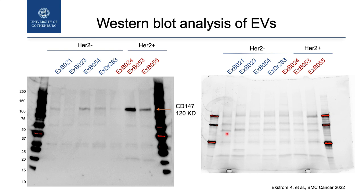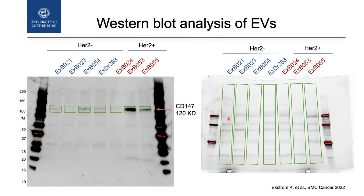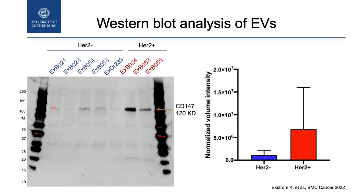We can solve this if we use the total protein that we loaded on the gel and make the comparison. These are vesicles isolated by size exclusion chromatography. We looked at the protein CD147. To say if we really have more or less of this protein, we did the comparison — each lane compared with the bands we were interested in. We ended up with a published graph showing an increased amount of CD147 protein in vesicles from HER2 positive breast cancer patients.